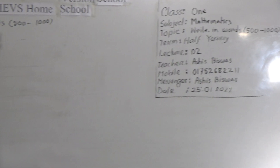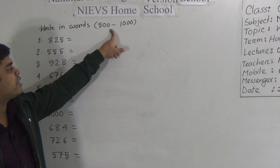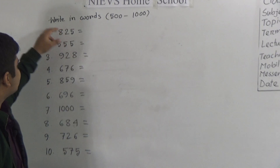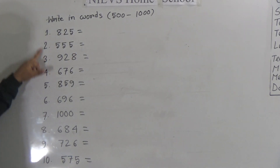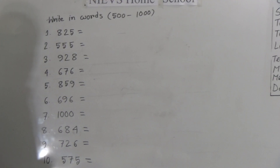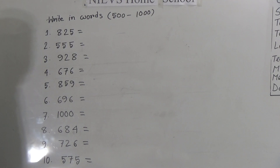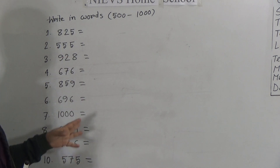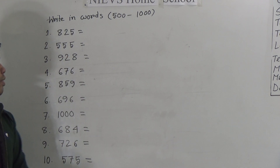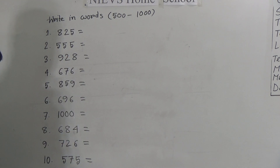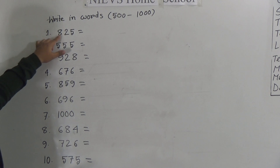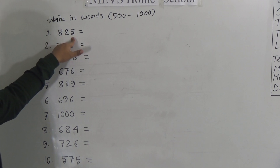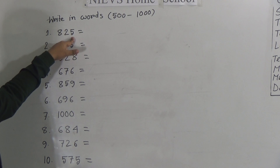If you memorize the spelling of numbers, then you can easily write any number in words. So let us start our today's topic: Write in words 500 to 1000. Here some numbers are given — 10 numbers are given. We will write these numbers in words.